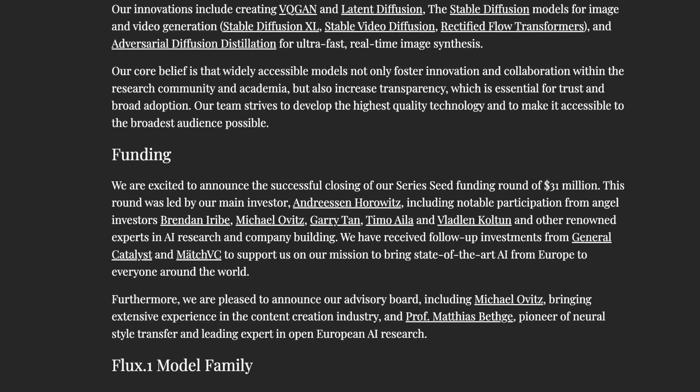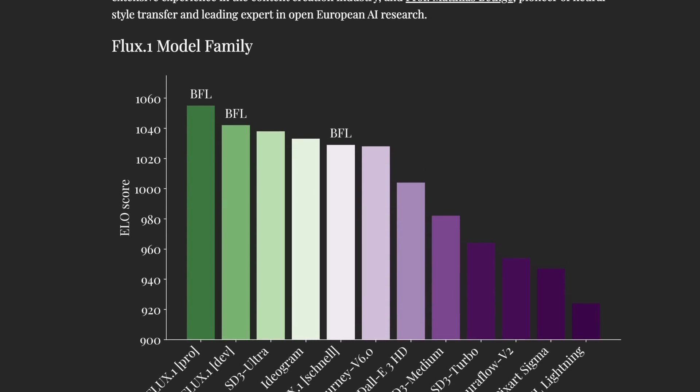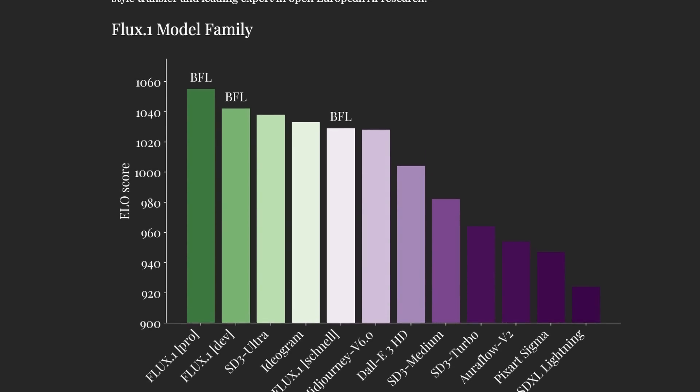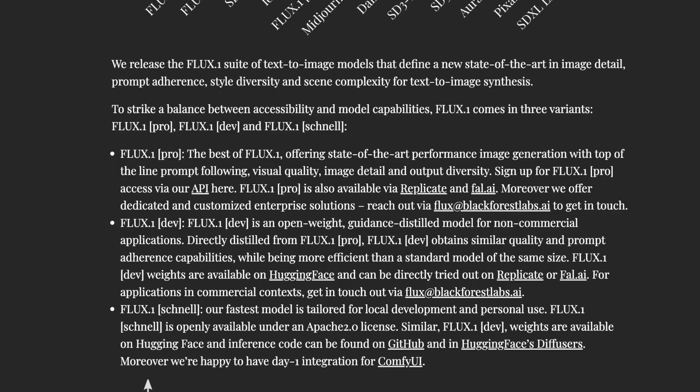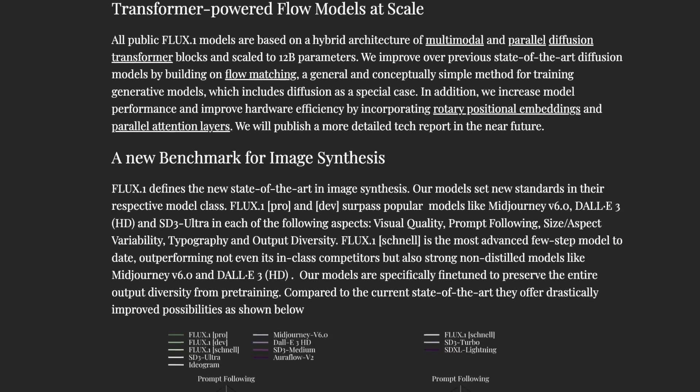Their funding is pretty impressive, coming from Andreessen Horowitz, Garry Tan, and a number of big names in the Bay Area. Their current model in terms of ELO score is really impressive — Flux.1 Dev is better than Stable Diffusion 3 Ultra and a number of other impressive models like Midjourney V6. There are a few different models: Pro, Dev, and Schnell — with Schnell being the fastest. And this model is really impressive.